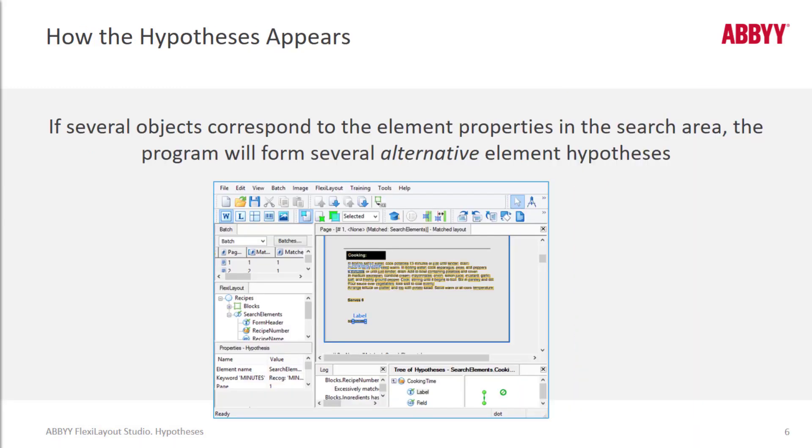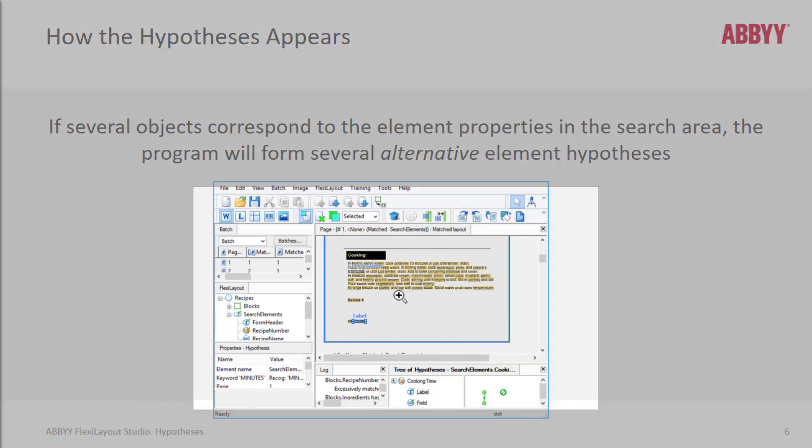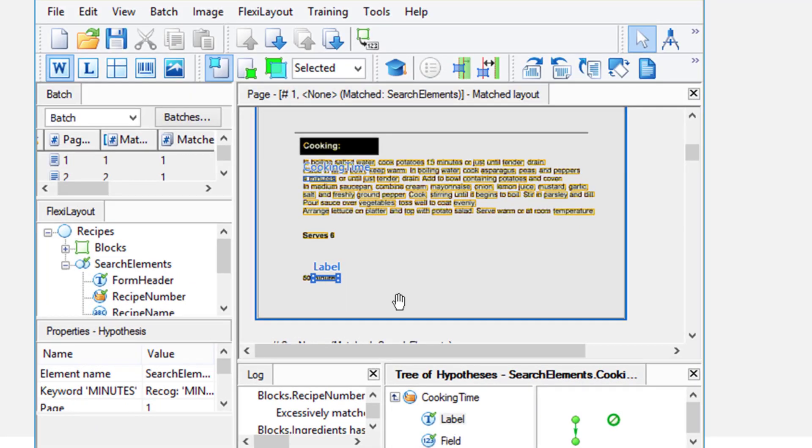This screenshot shows when two objects correspond to the element properties in the search area. So there's an alternate element hypothesis that was formed. And we can take a closer look. So we can see that we are finding the word minutes as the label field, but we're finding it in two places in this paragraph and here underneath the paragraph. So if we clicked on this filled green dot, it would take us directly to the selected hypothesis. If we clicked on this green dot, we would be taken to this one that was not selected. And oftentimes that's a matter of quality, and we're going to talk more about that momentarily.